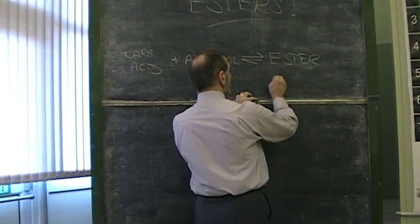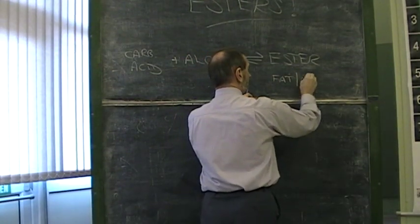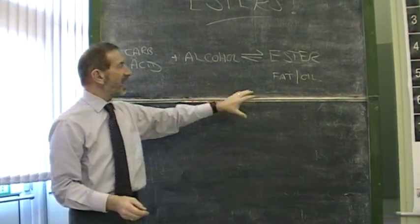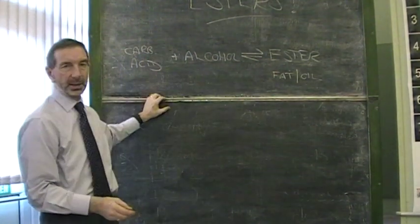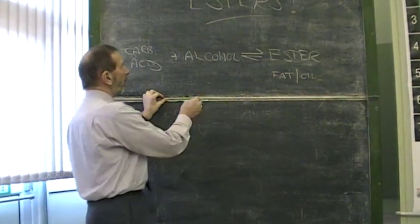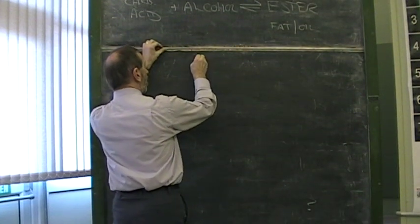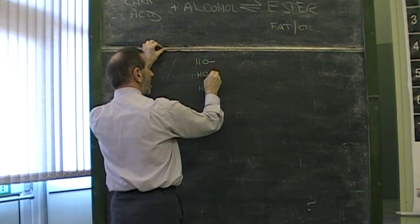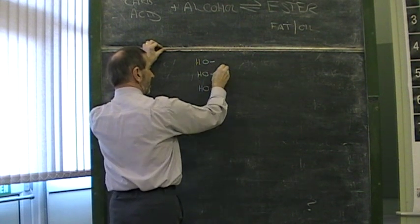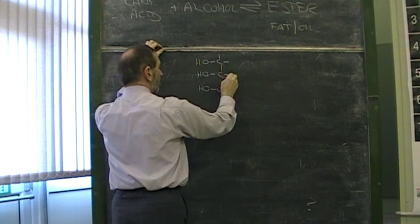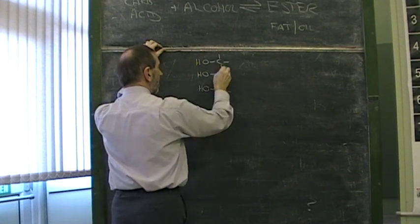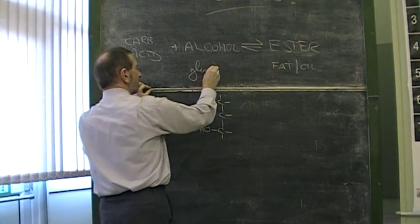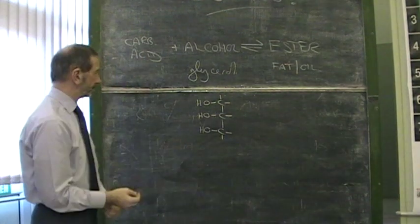So, if our ester is a fat or an oil, what are the ingredients? Well, what makes these esters unusual is that the alcohol and acids are unusual. The alcohol is unusual because it's a triple alcohol. It has three OH groups, three hydroxyl groups. Your normal, typical alcohol would only have one of these OH groups. This is an alcohol called glycerol. Some people call it glycerin.